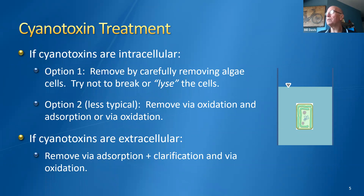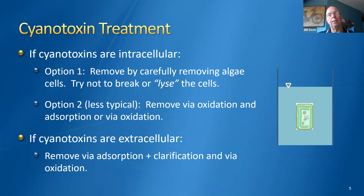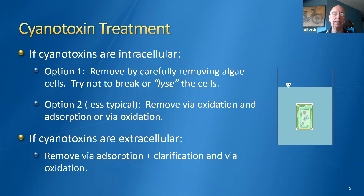If we have intracellular cyanotoxins, the most commonly used approach is to carefully remove the algae cells without lysing them and dispose of those algae cells. There are some instances where water systems have chosen to lyse the algae cells intentionally, making the cyanotoxin extracellular, and then removing it via oxidation or via oxidation and adsorption. They would add an oxidant at the beginning of the treatment process to lyse the cells and then adsorb the cyanotoxin afterwards.